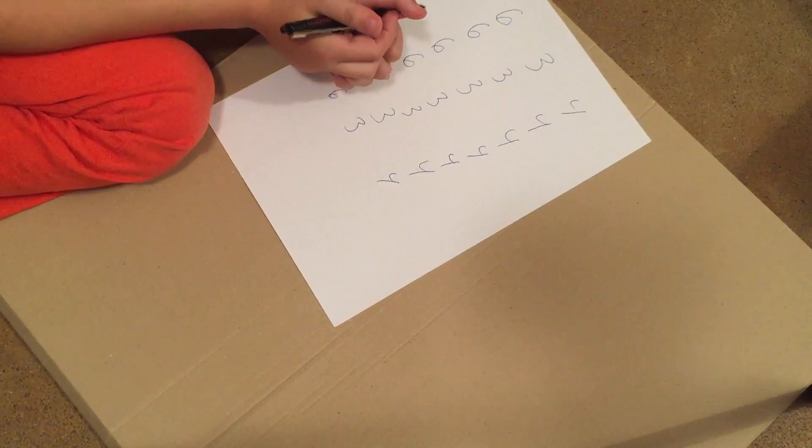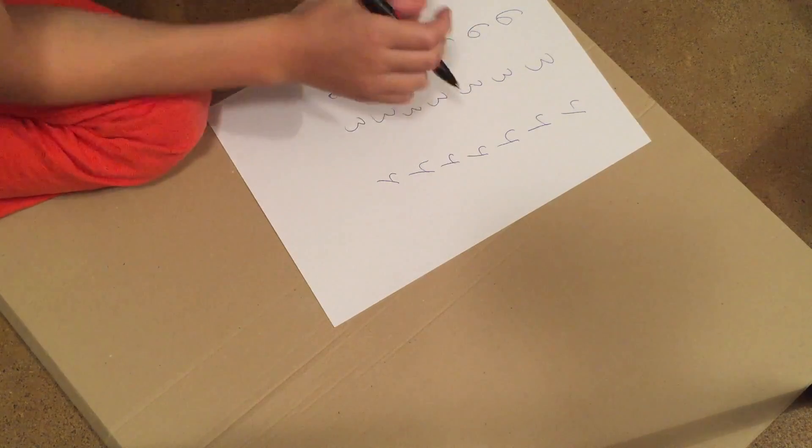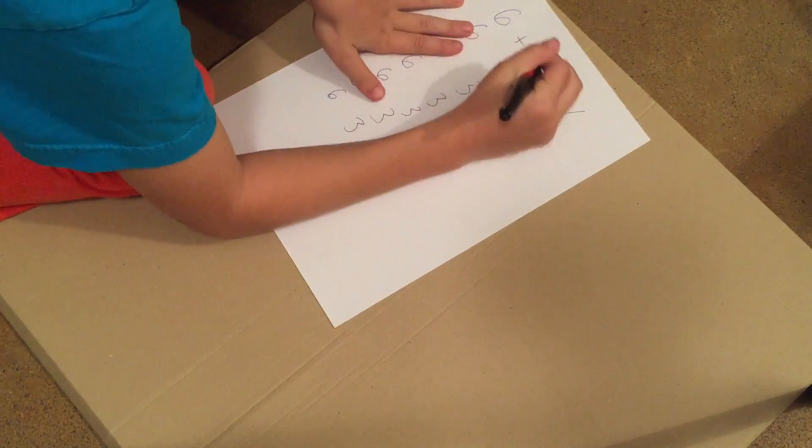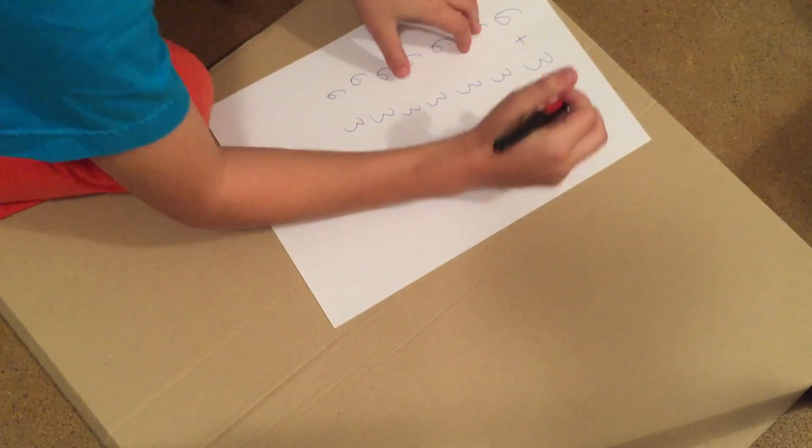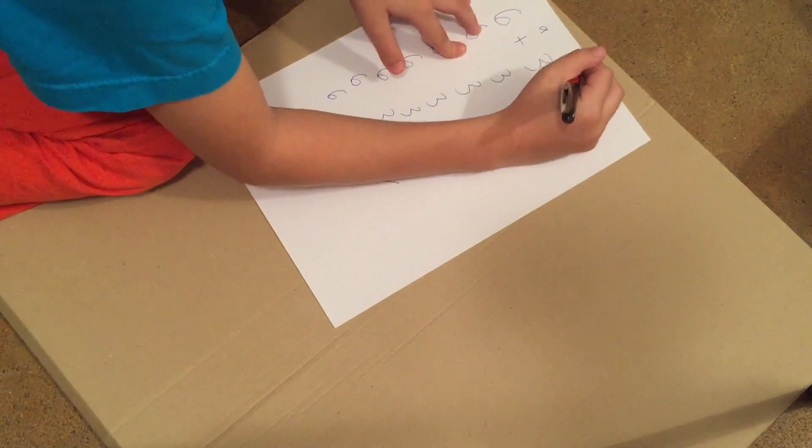I will now explain the parentheses. So first I will do just a normal equation. 6 plus 3 plus 4. 6 plus 3 is 9, and 9 plus 4 is 13.